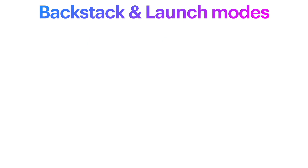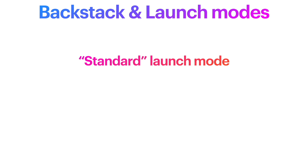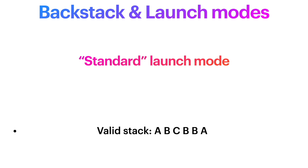The first launch mode is the standard one — this is the default behavior. The system creates a new instance of the activity in the task from which it was started and sends the intent to it. The activity can be instantiated multiple times; each instance can belong to different tasks and one task can have multiple instances. So if you consider activities A, B, C, D, a valid stack could look like A, B, C, B, B, A. Pressing the back button would naturally pass through all activities in reverse order.